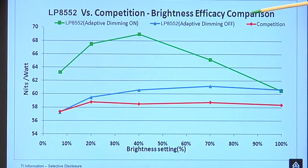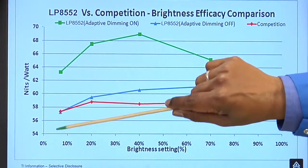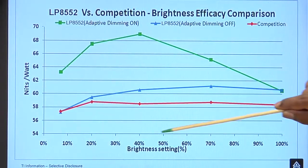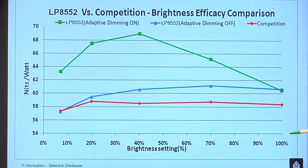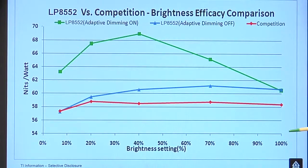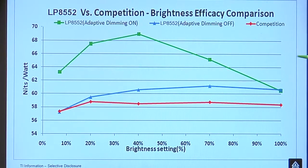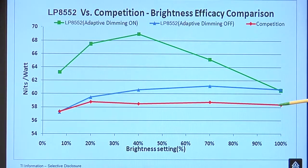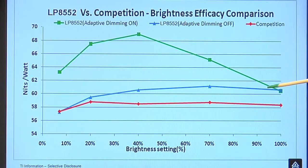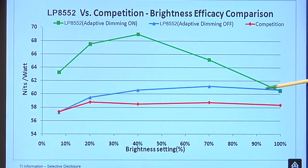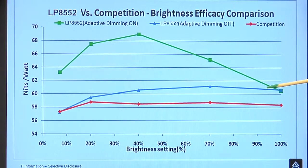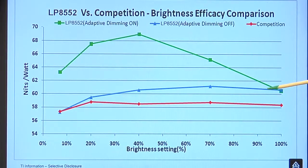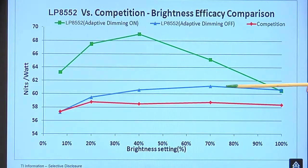Here is a graph plotting light output on the Y axis versus light setting, brightness setting on the X axis. The red graph you see here is how typically the competition performs. The blue graph you see here is how 8552 performs without the Adaptive Dimming on. You can see the difference in performance.